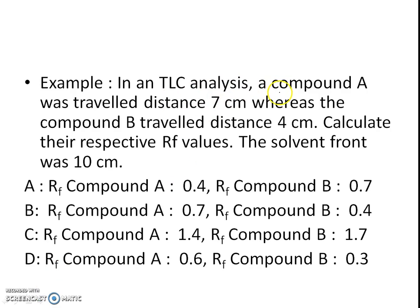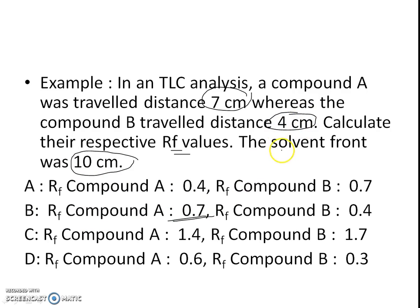Another example: in TLC analysis, compound E traveled a distance of 7 cm whereas compound B traveled 4 cm. Calculate their respective RF values. The distance traveled by compound E is 7 cm divided by the distance traveled by the mobile phase, giving an RF value of 0.7 for compound E. For compound B, distance traveled is 4 cm divided by the solvent distance, giving an RF value of 0.4. So the RF value for compound E is 0.7 and for compound B is 0.4.